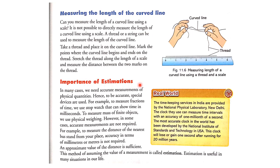Importance of estimation. In many cases we need accurate measurement of physical quantities, so special devices are used. For example, to measure fractions of time we use a stopwatch that can show time in milliseconds. To measure the mass of fine objects, we use a physical weighing balance.